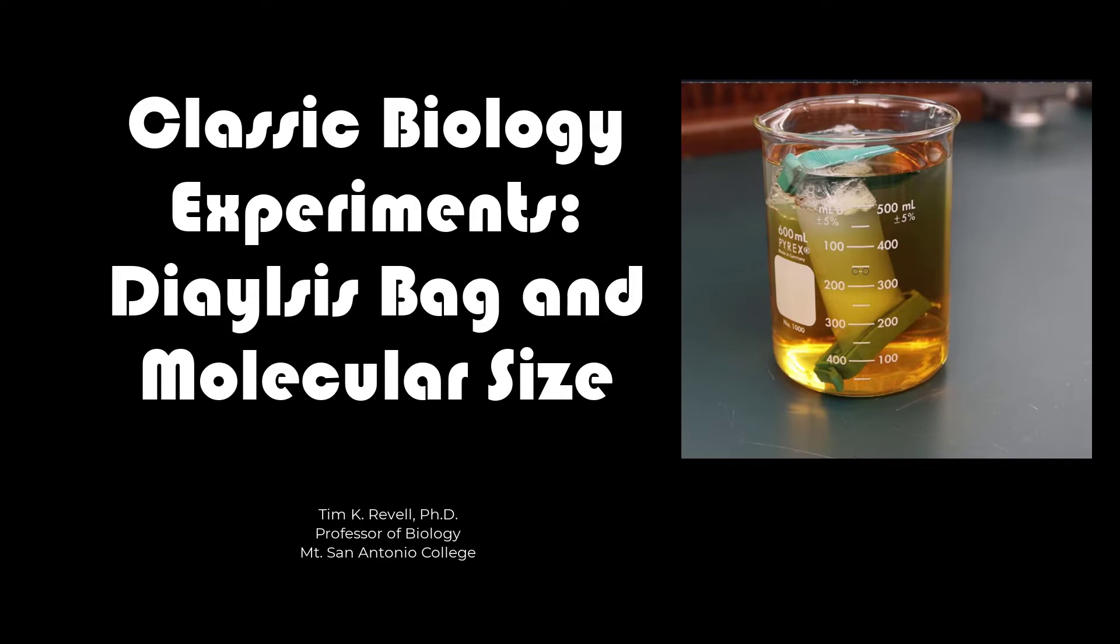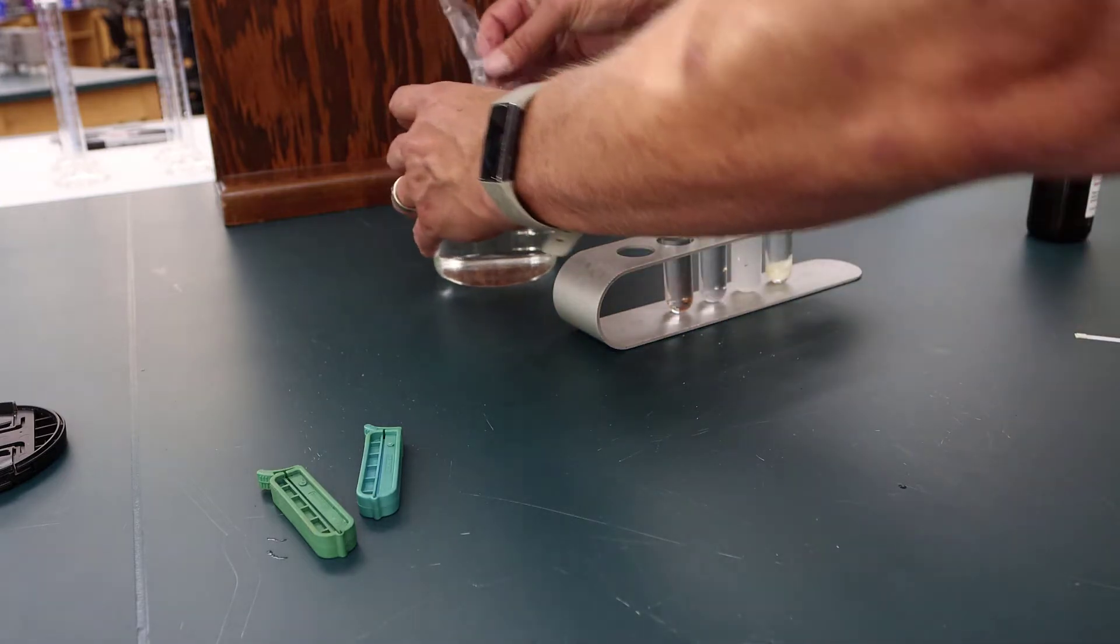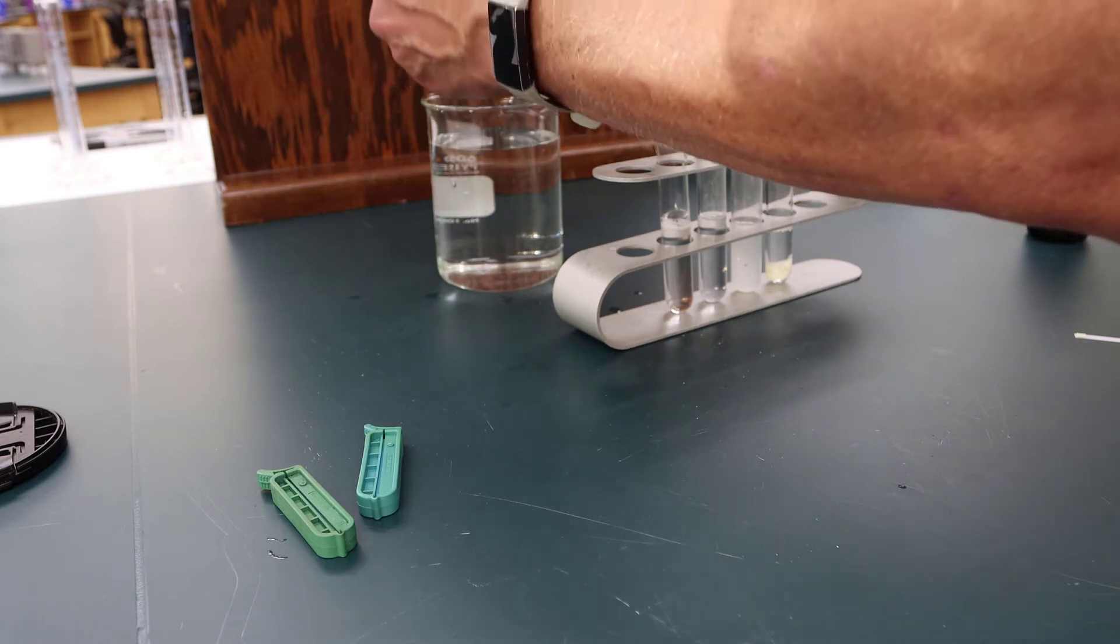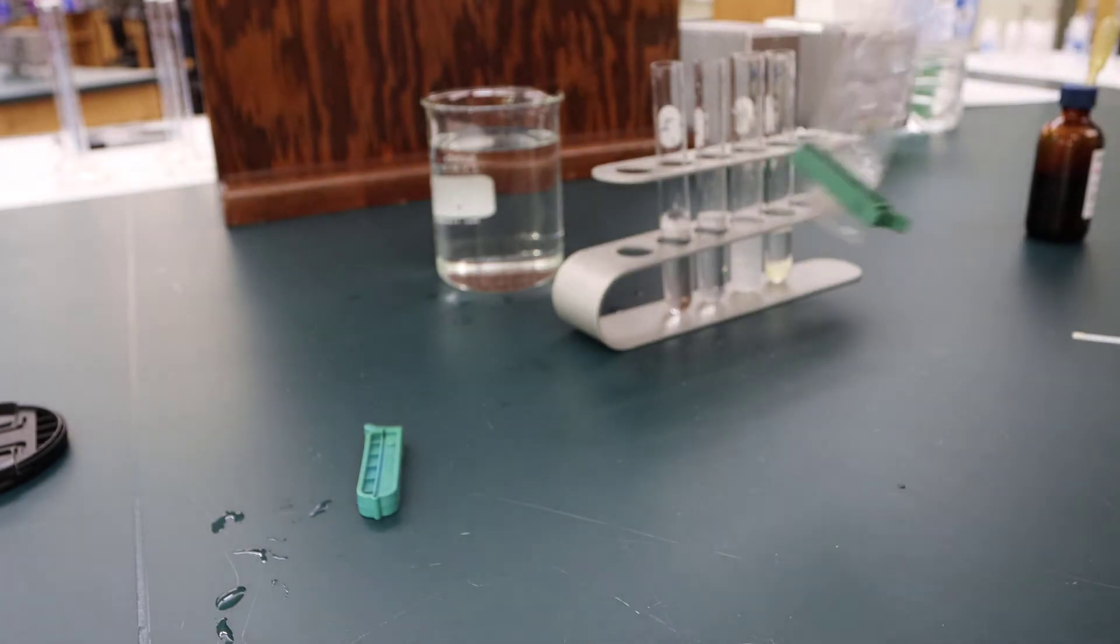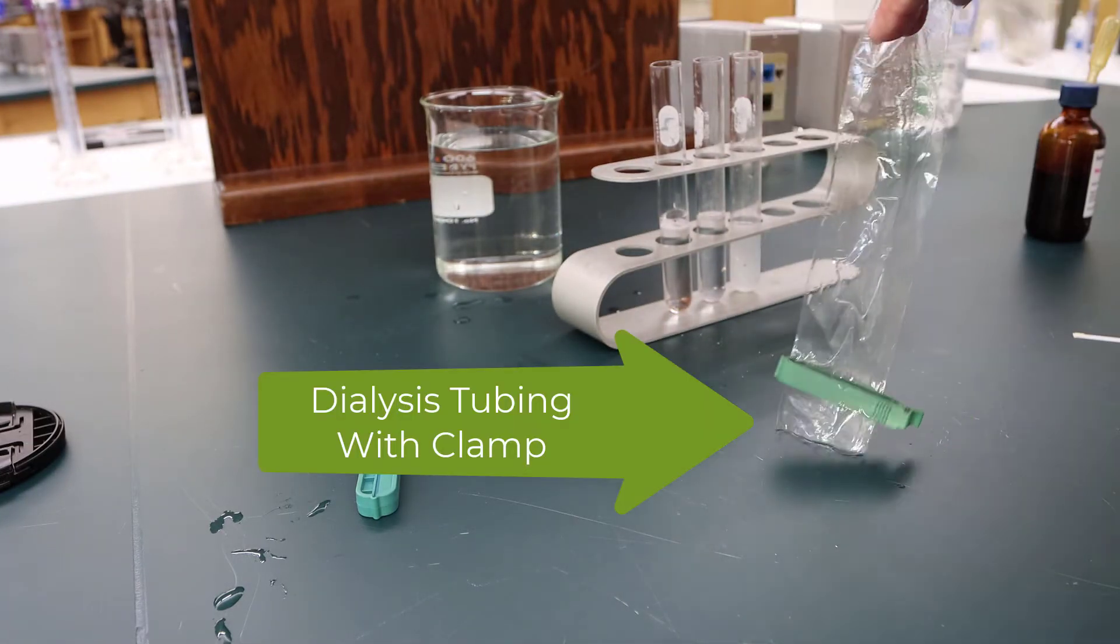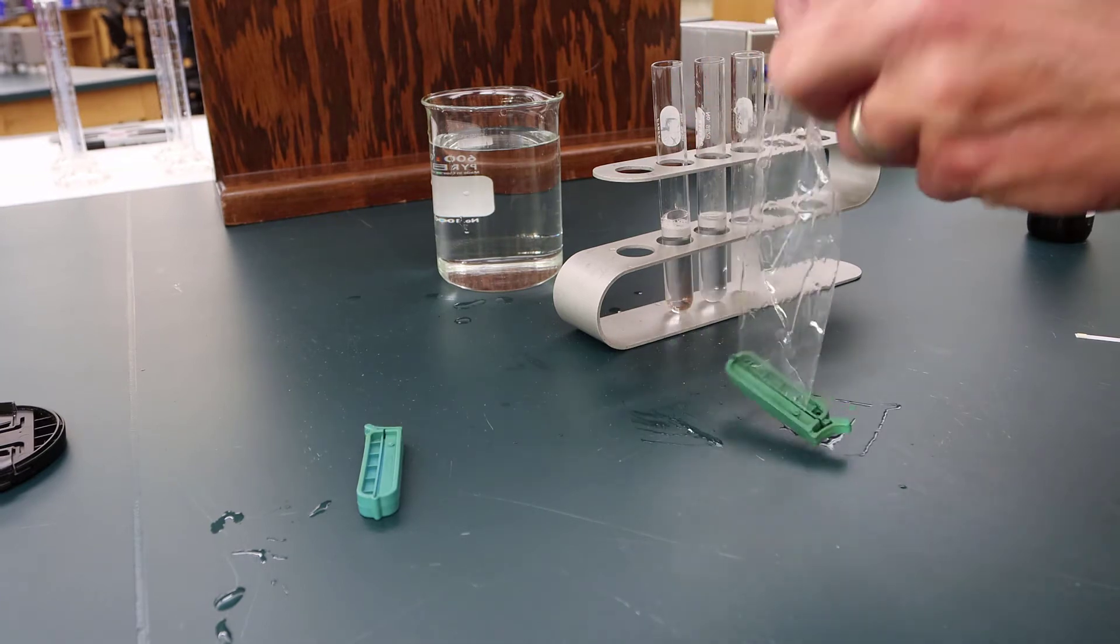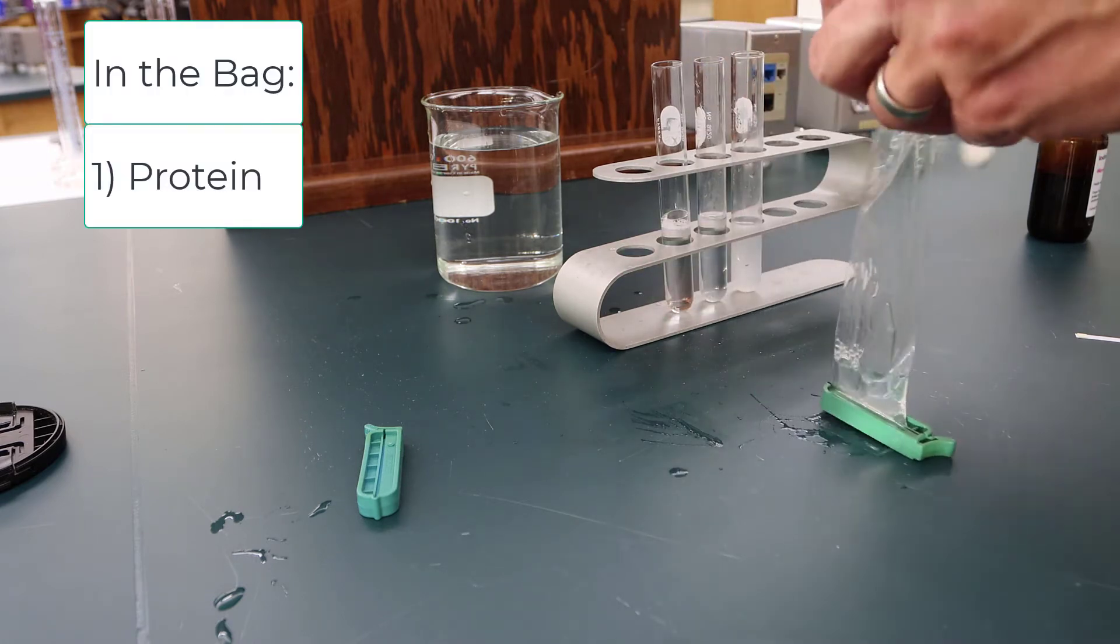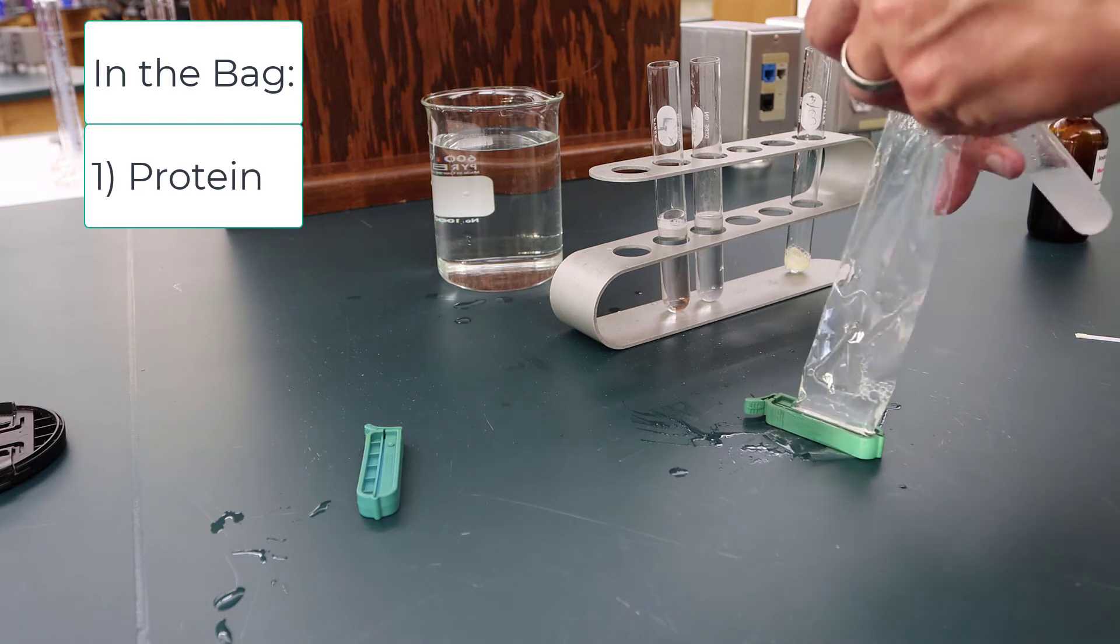All right, hi everybody. In today's experiment, we're going to take about a 10 centimeter piece of dialysis tubing, put a clamp on one end, then open up the tube to make it into a bag. We're going to put egg albumin inside the bag - a mixture of egg albumin with about 10 milliliters of water - as our protein source.